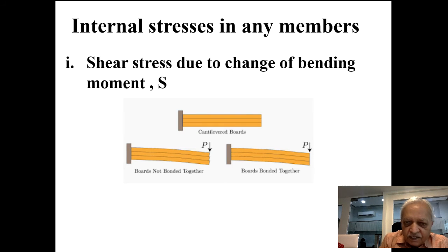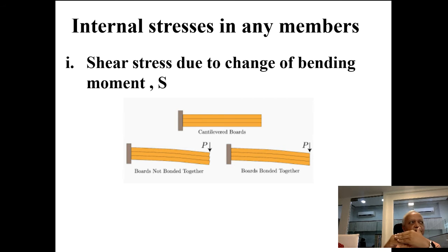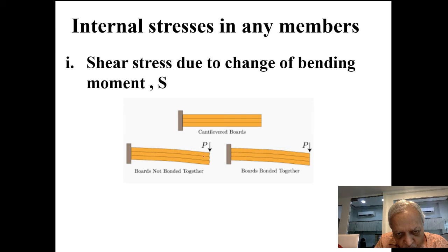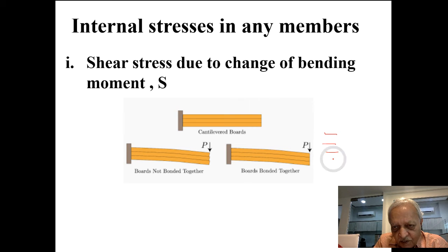The second type is shear in beams arising from change in bending moment. When three separate strips are placed one over the other without connection and loaded, each strip bends independently — developing tension at the bottom and compression at the top. The strips slide relative to each other at the interfaces. This sliding action is the shearing that occurs between layers in a beam.